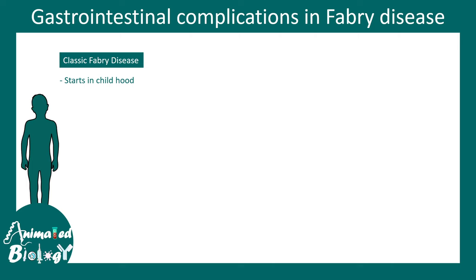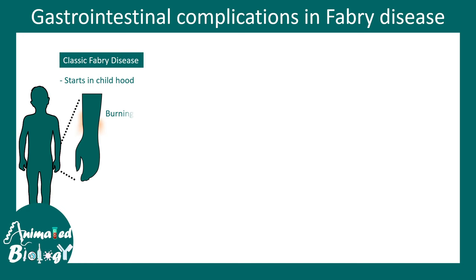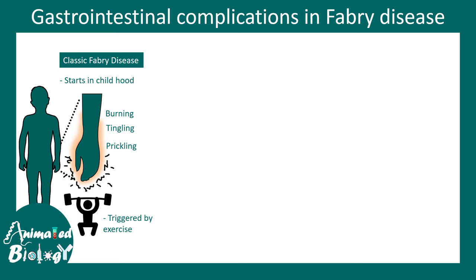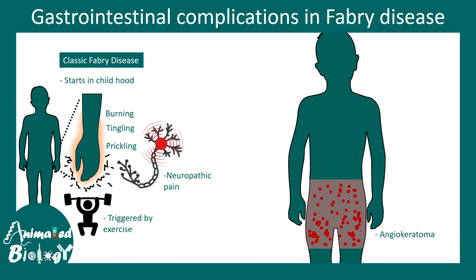The classic Fabry disease starts from early childhood, whereas the non-classical form has a delayed onset. There are burning, tingling, and prickling sensations in the lower extremities such as the hands or legs, and these sensations are triggered by exercise. There is also neuropathic pain which is sometimes quite unbearable. A specific type of rash develops in the lower abdomen and the bathing trunk area, known as angiokeratoma.